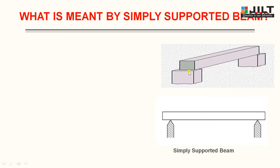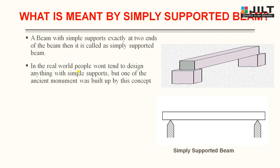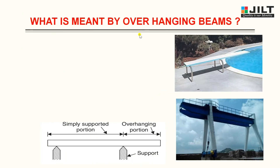Now let us see what is meant by a simply supported beam. You can view the images — two supports are available and one beam resting on those two supports. A beam with simple supports exactly at its two ends is called a simply supported beam. In the real world, people won't tend to design with simple support, but one of the ancient structures was built using this concept. A beam supported or resting freely on the supports at both ends is known as a simply supported beam.